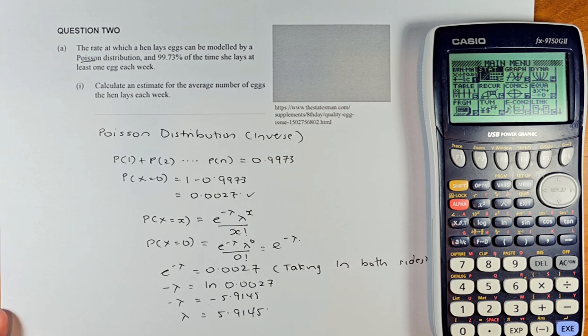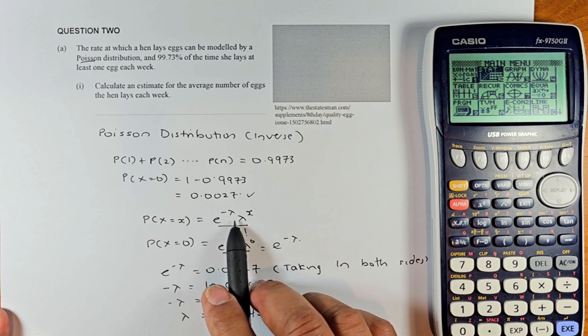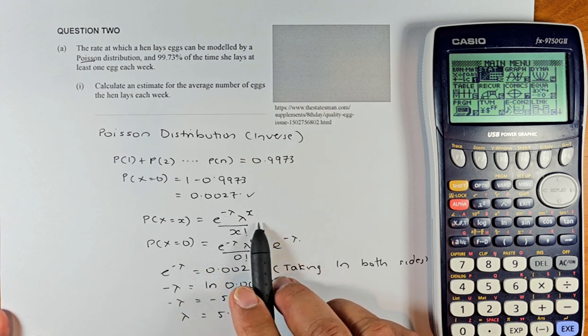So once you know the probability of X equal to 0 is equal to 0.0027, we are going to use the inverse Poisson or Poisson formula. So Poisson, X equal to X is e^(-λ) λ^X over X factorial. This is given in the formula booklet.